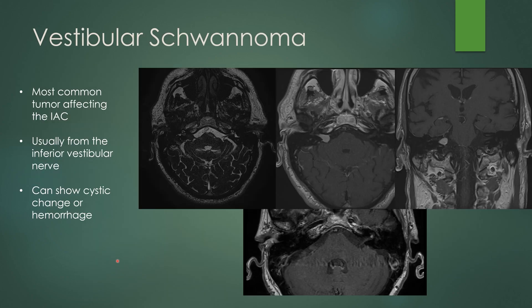Vestibular schwannoma is the most common tumor affecting the IAC. It usually arises from the inferior vestibular nerve. When they get big, they can show cystic change or hemorrhage. The classic appearance on IAC imaging is an ice cream cone-shaped mass widening the porus acusticus with enhancement extending into the internal auditory canal and into the cerebellar pontine angle. Here it is on the coronal view, homogeneously enhancing, although it can be heterogeneous. A purely intracanalicular vestibular schwannoma — a nodular focus of enhancement within the distal IAC — can result in pulsatile tinnitus because the tumor has vascularity going to it.